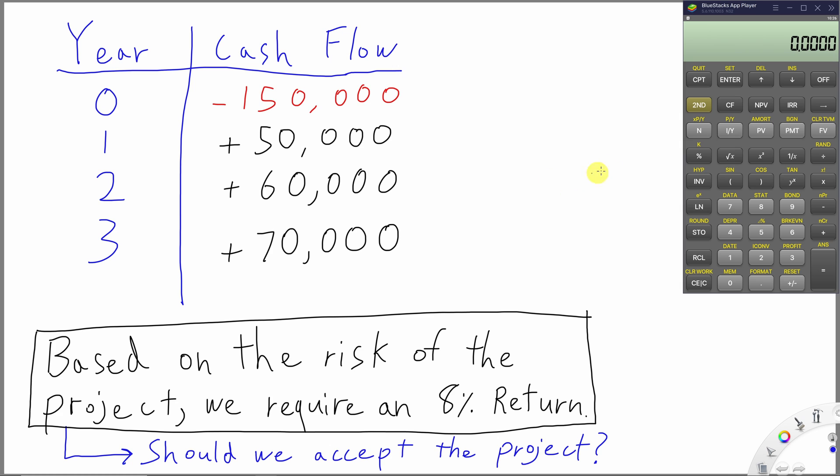The first thing we need to do is go over to this CF button, and we'll hit that. If you see values that aren't zero here, it's best to click second and then clear work so that we can get a completely clean slate to start off.